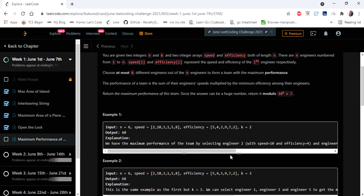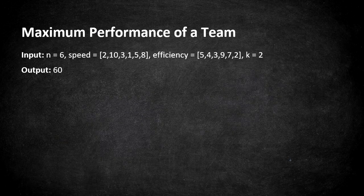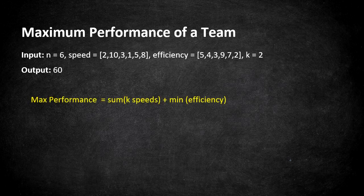Let's understand this problem with an example. Here the input has six employees and we need to choose exactly two employees for a team with maximum performance. Performance is calculated as the sum of selected employees' speeds multiplied by the minimum efficiency out of all the employees we have selected.